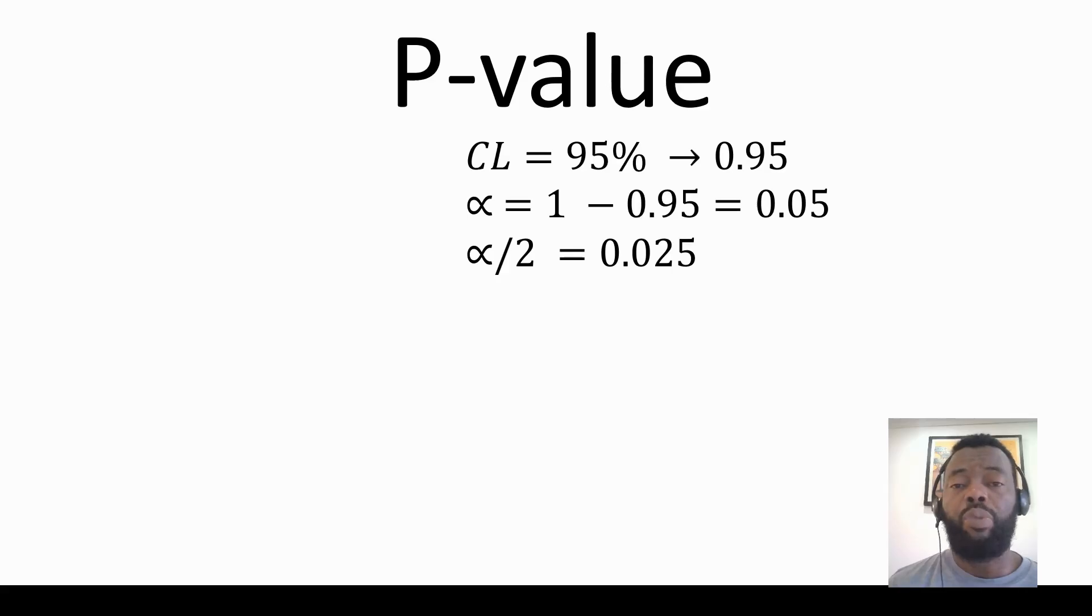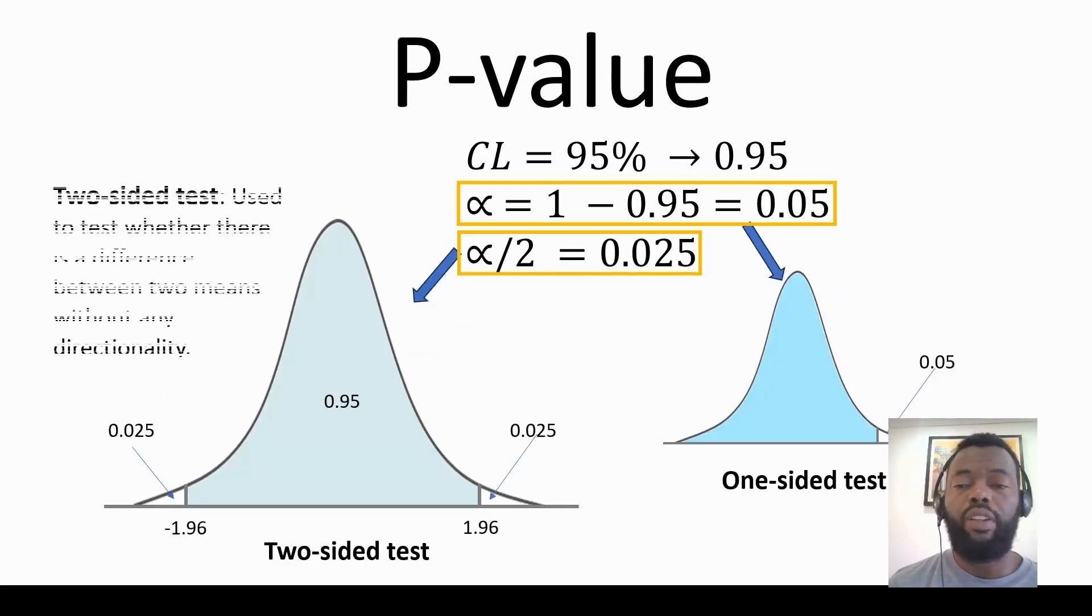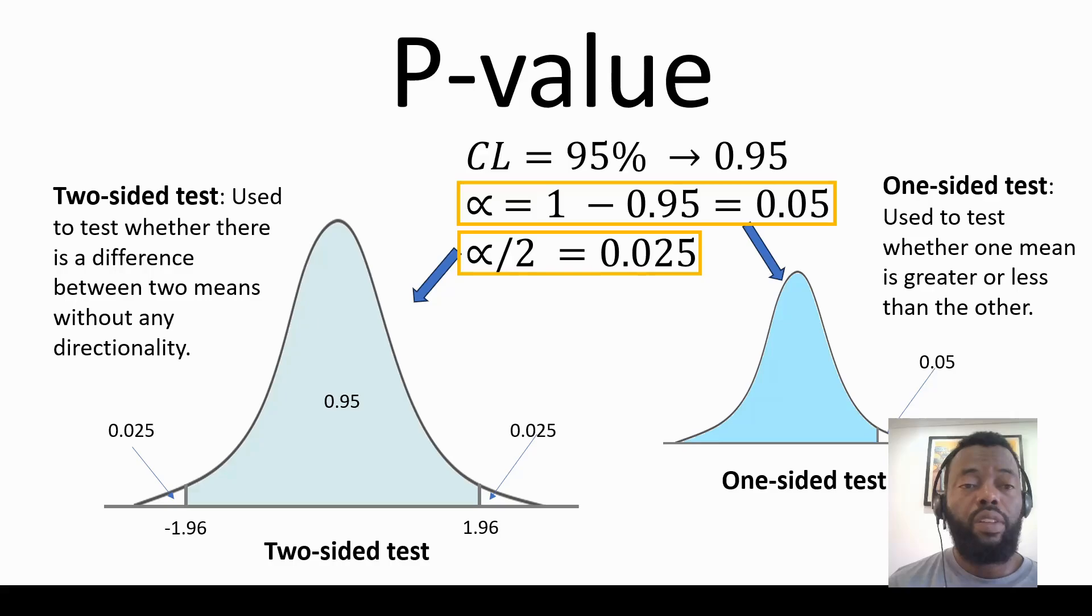That corresponds to alpha equals 0.05 when it's a one-sided test, and we divide by two to have 0.025 if it's a two-sided test.